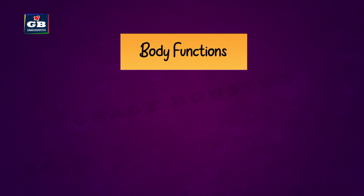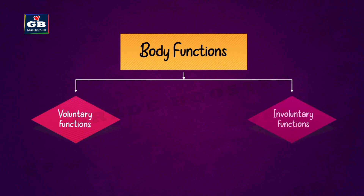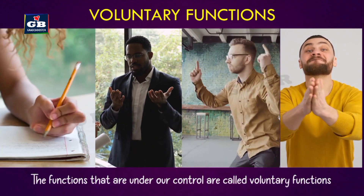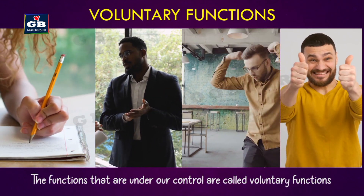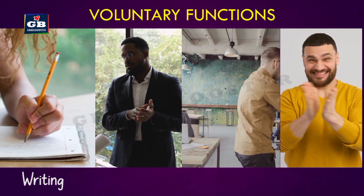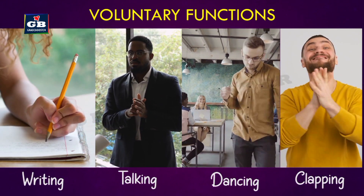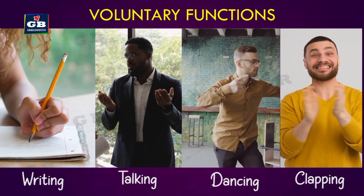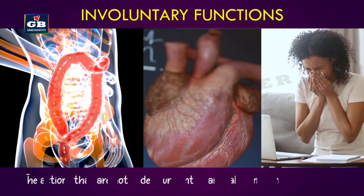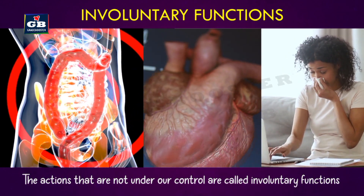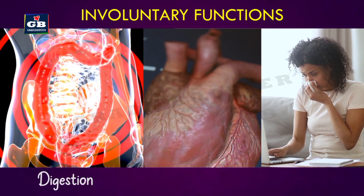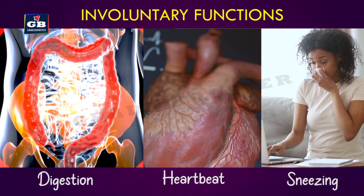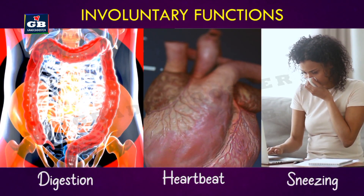Our body functions are of two types: voluntary and involuntary. Functions that are under our control are called voluntary functions — writing, talking, dancing, and clapping are examples of voluntary functions controlled by our brain. Actions that are not under our control are called involuntary actions. Digestion, heartbeat, and sneezing are examples of involuntary actions controlled by the human brain.